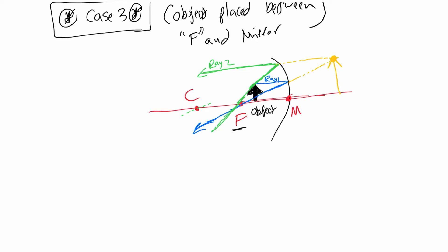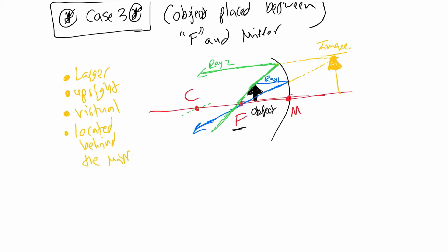The image you get in case number three is larger in size, upright (same direction as the object), virtual — meaning we cannot put it on a surface — and located behind the mirror.